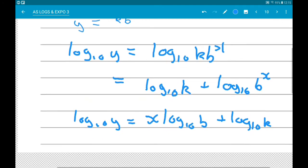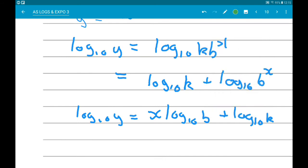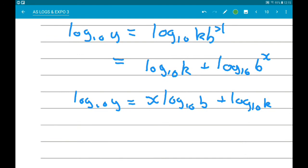Now, to make things more relatable then, in y equals mx plus c, m is the gradient. So here log10b is our gradient and c is our y-intercept. So here log10k is our y-intercept. So we now need to find the gradient of the line and the y or log10y-intercept.